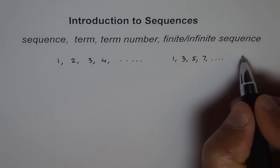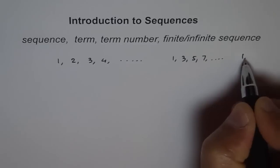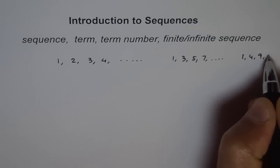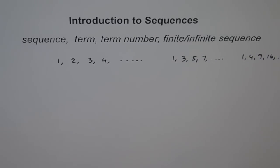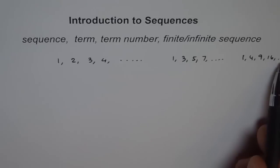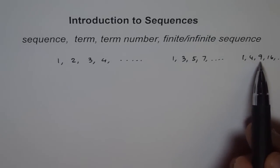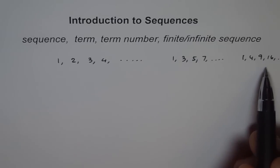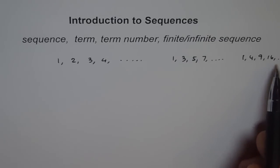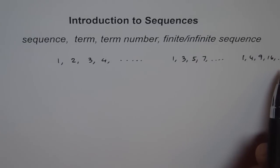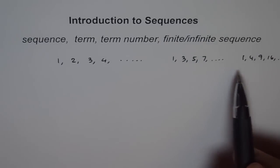Similarly we could have patterns like 1, 4, 9, 16 and so on. Here the first number is 1, the second is 4, the third is 9, the fourth is 16 — these are squares of numbers. All such patterns are called sequences, and they can actually be written as a function.